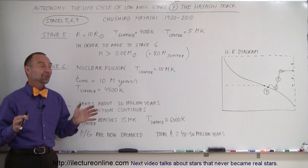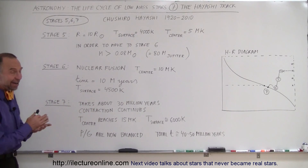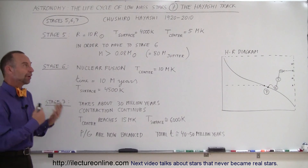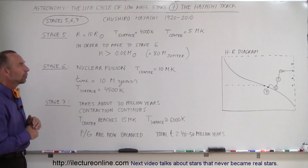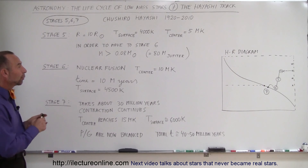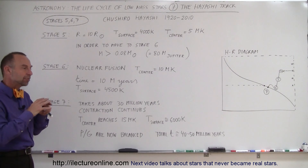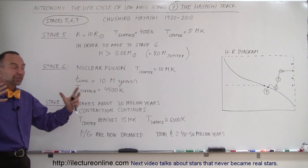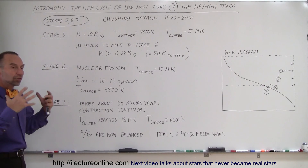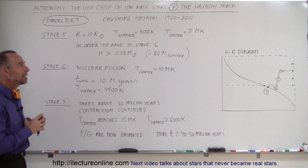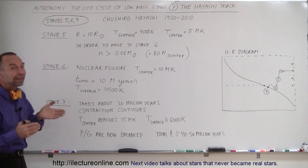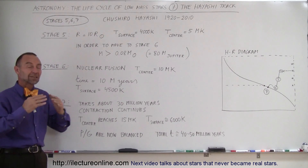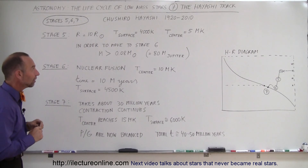Welcome to Electron Online. In this video we're going to talk about stages 5, 6, and 7 of the development of a star into a real bona fide star on the main sequence. We left off at stage 4 where we had a protostar about 50 to 100 times the size of our current sun, continuing to contract under the forces of gravity. Now at stage 5, the radius is about 10 times its current radius — still much, much larger than its current size.